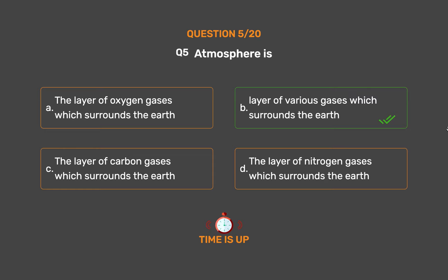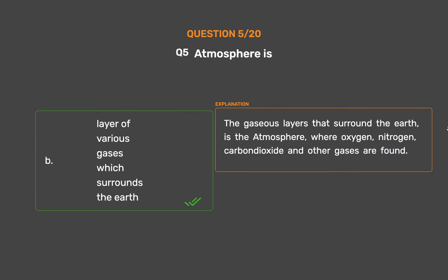The correct answer is Option B: Layer of various gases which surrounds the Earth. The gaseous layers that surround the Earth is the atmosphere, where oxygen, nitrogen, carbon dioxide and other gases are found.